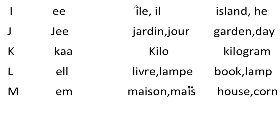K — the pronunciation is 'ka'. Example: kilo, kilogram. L — the pronunciation is the same as in English, 'el'. Example: livre (book), lampe (lamp). Here in French, the spelling of lampe is L-A-M-P-E.